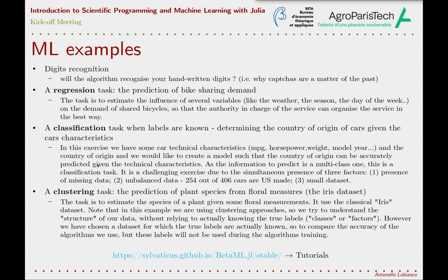These other three examples come from the documentation of BetaML, a machine learning library we wrote in Julia. In the first one, we predict the influence of several variables on the demand for public rented bikes — the variable to predict is the number of rented bikes, and even if the output is not strictly continuous, this is commonly regarded as a regression task. In the second example, we have a database of technical characteristics of commercial cars and try to infer the country of origin — this is a classification task.